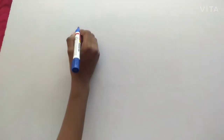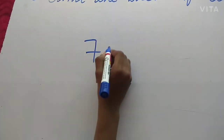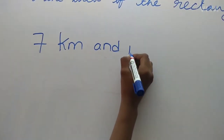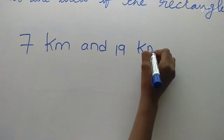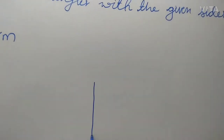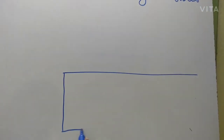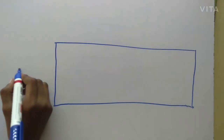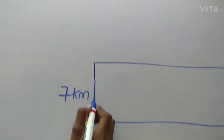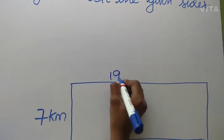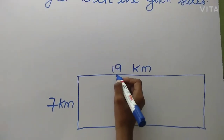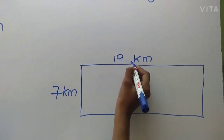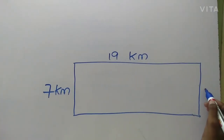Let me explain another sum. This is 7 kilometers and 7 kilometers and 19 kilometers. Area of rectangle — this is 7 kilometers and length is 19 kilometers. In the rectangle, all the opposite sides are equal. 19 kilometers we have to apply here, and 7 kilometers we have to apply here.